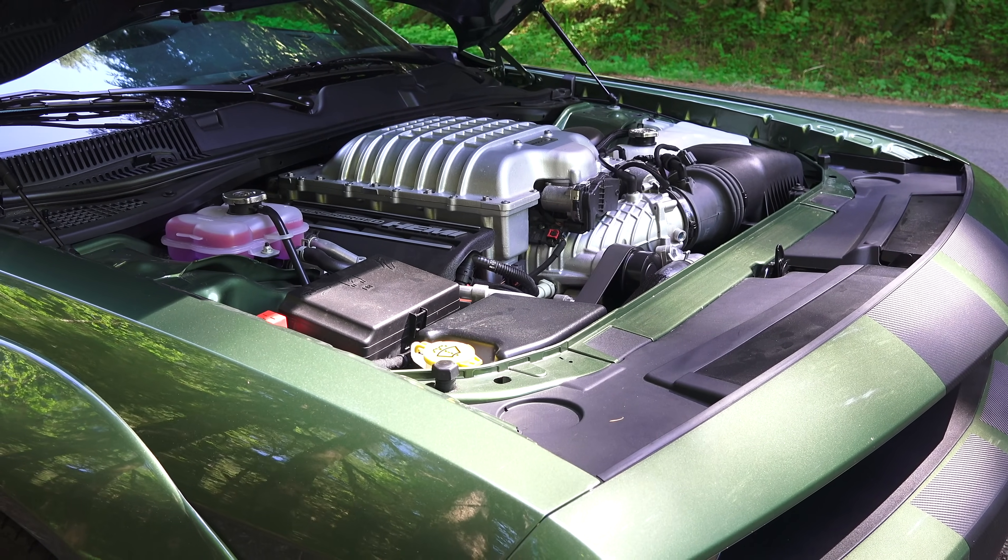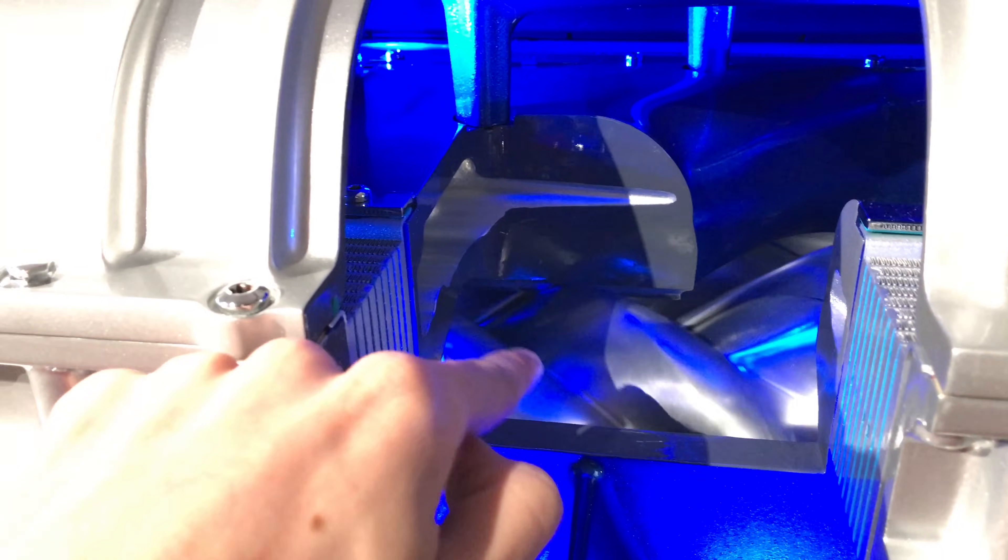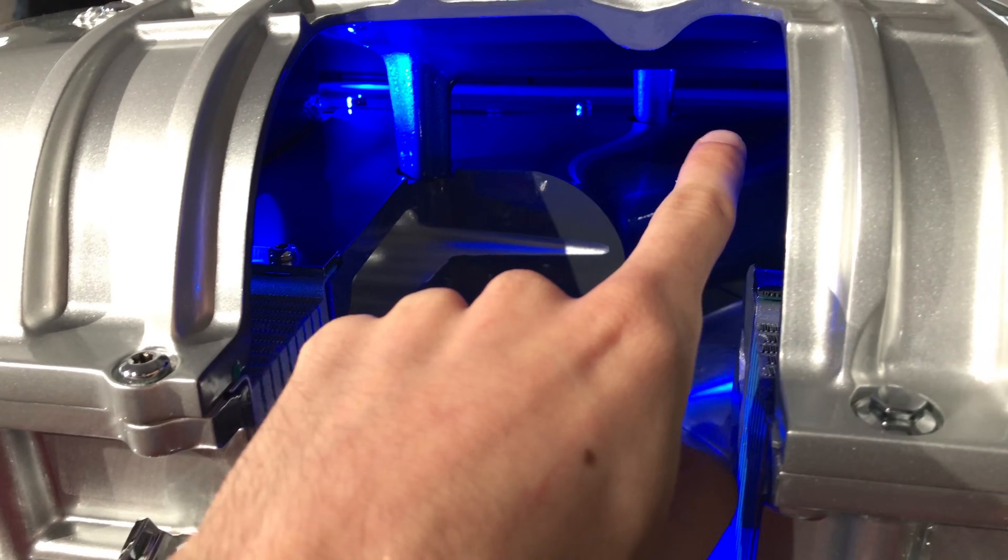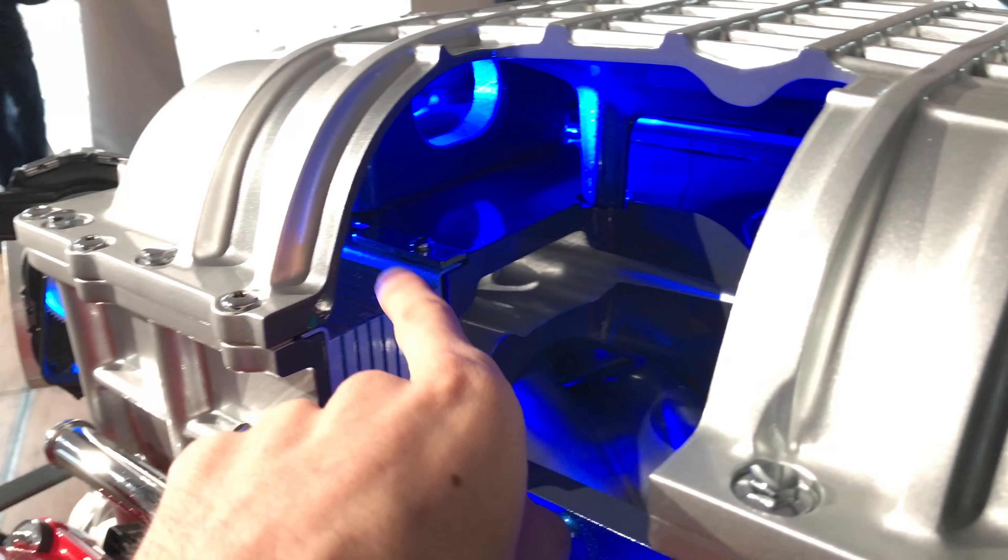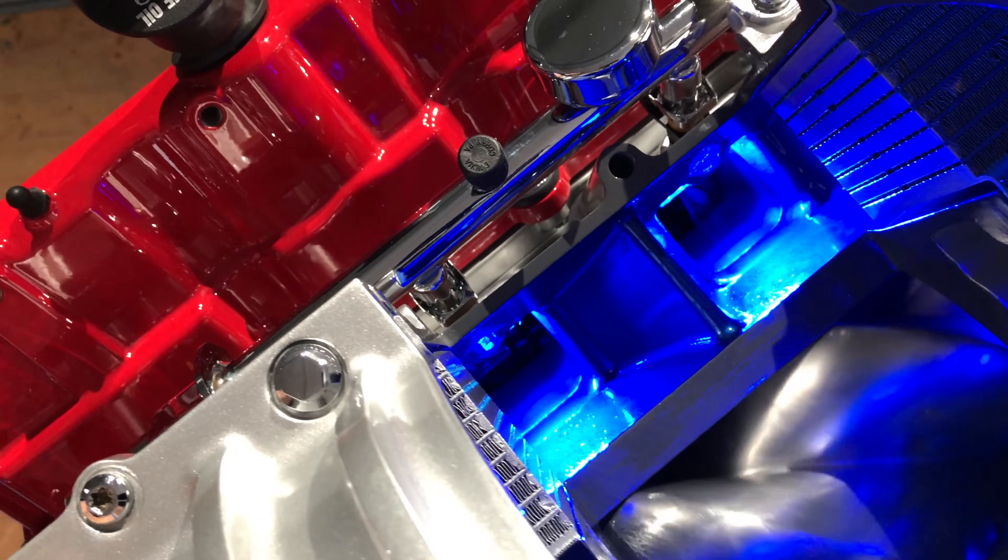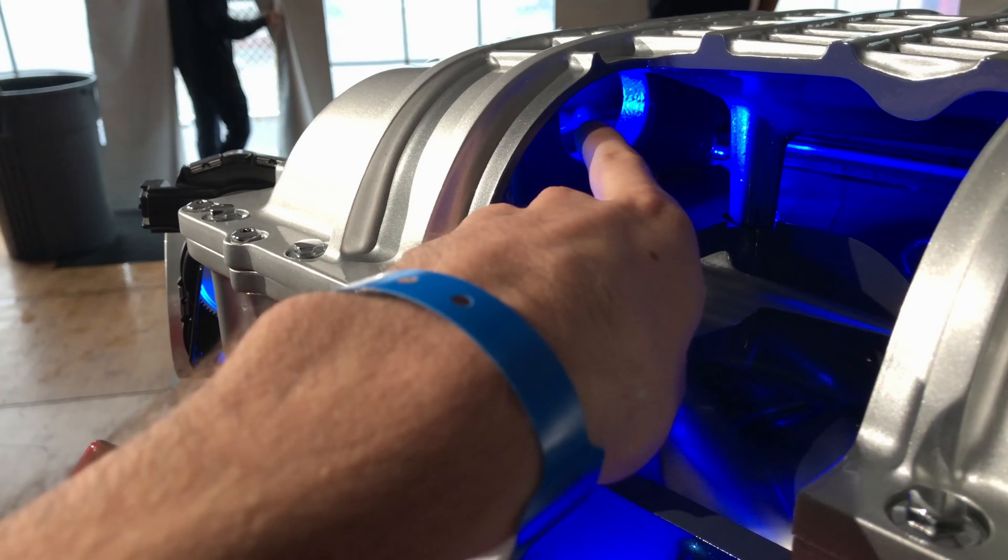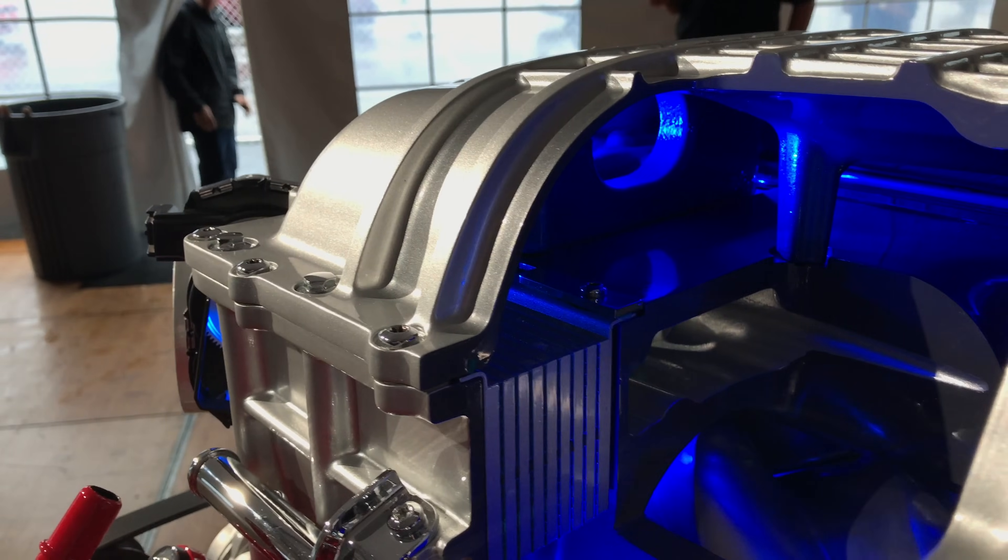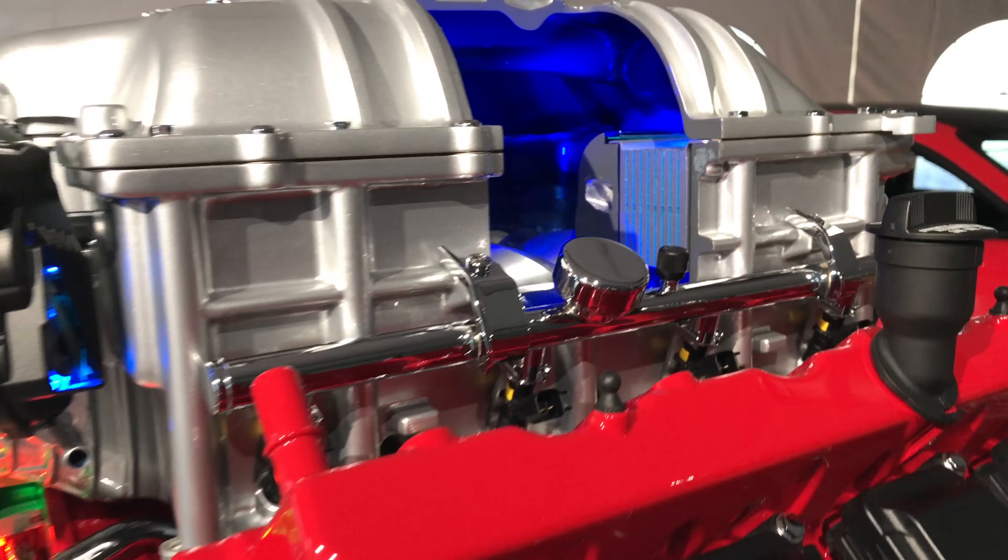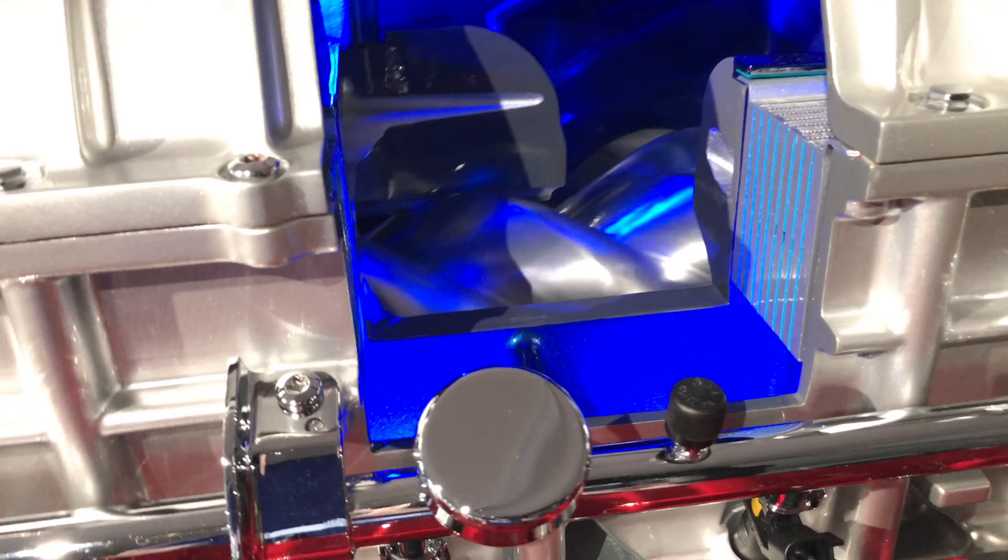And here's a look inside a twin screw style supercharger used on the Dodge Hellcat engines made by IHI. Air comes in through the throttle, is compressed by the rotors, travels up into a chamber, and then down through an intercooler before traveling down the intake runners to the individual cylinders. This example also has a bypass valve for low load operation.